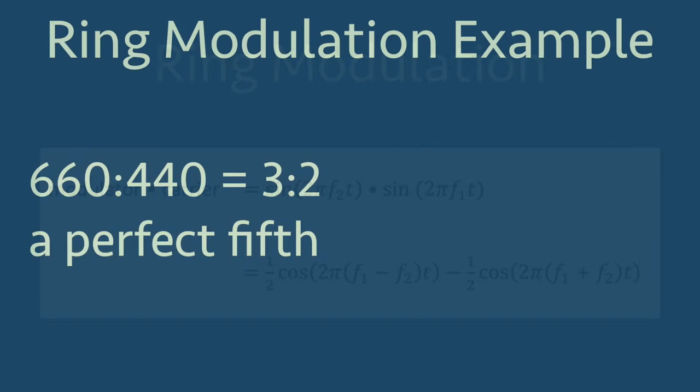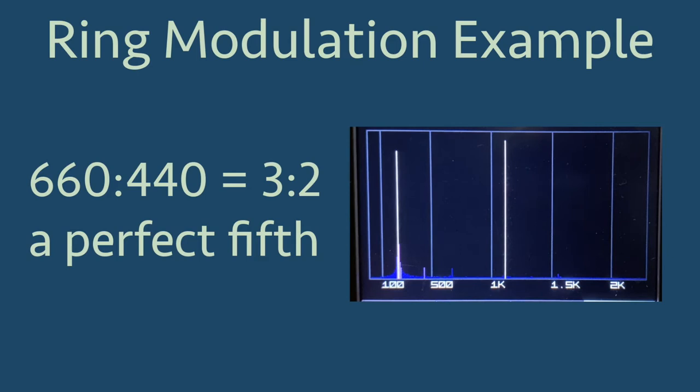In the example we have heard so far, the ratio of frequencies is 660 to 440, or simply 3 to 2, which is the harmonic interval of a perfect fifth.